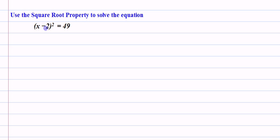Alright, it says here to use the square root property to solve the equation. And here we have x minus 2 squared is equal to 49.